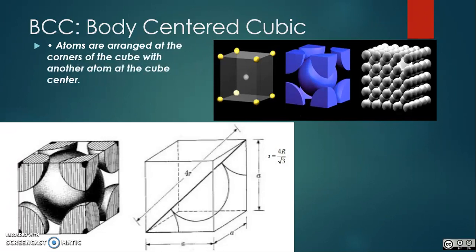The body-centered cubic unit cell has atoms at each of the eight corners of a cube, plus one atom in the center of the cube. Each of the corner atoms is the corner of another cube, so the corner atoms are shared among eight unit cells. It is said to have a coordination number of eight.